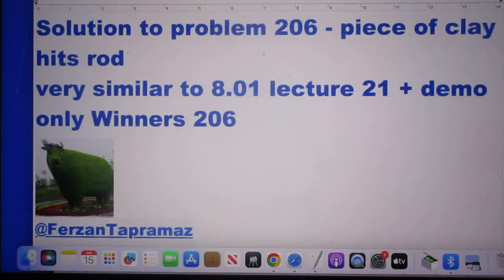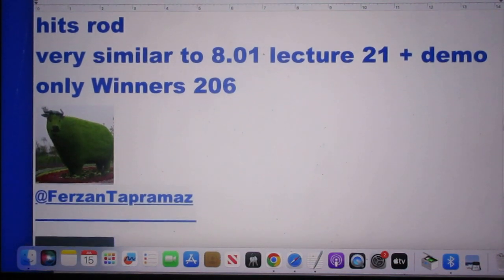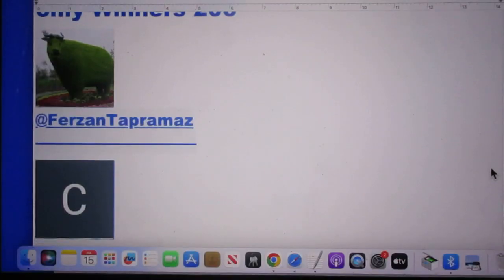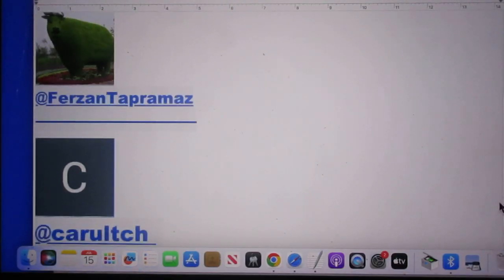Sadly, I have to say that there were only two winners. Ferzan Tapramaz, we have seen him before, not surprising perhaps. And Carultch, whom we have also seen before. But many others, whom we have seen before, didn't make it. They slipped up somehow.